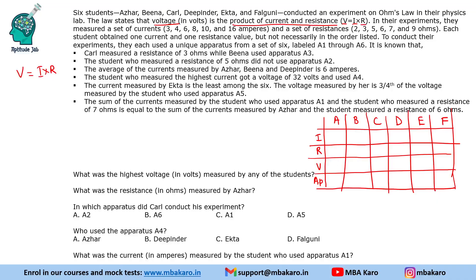Starting with some direct information: Carl measured a resistance of 3 ohms, while Bina used apparatus A3. So Bina is using apparatus A3 and Carl measured a resistance of 3 ohms. The student who measured a resistance of 5 ohms did not use A2 — we'll come back to this negative statement later.